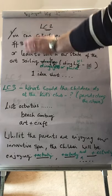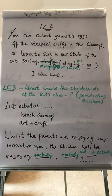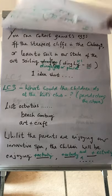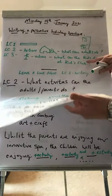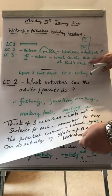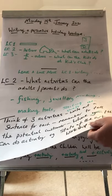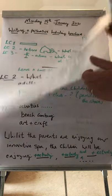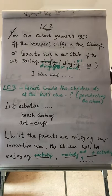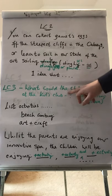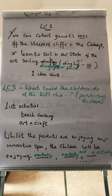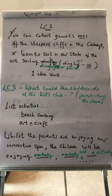Remember, that was learning chunk two. We're going to leave a gap before we put learning chunk one in. Learning chunk three is all about the activities that the children can do, because most hotels now provide kids clubs so that the children are entertained whilst the parents are doing other things. So what could the children do at the kids club whilst the parents are doing all those activities?